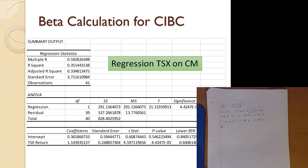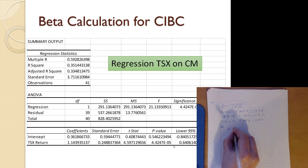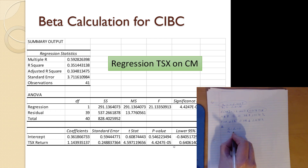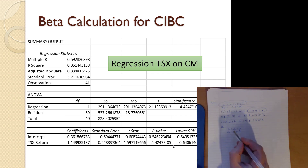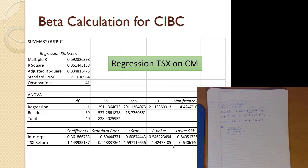Is the CIBC coefficient significantly different than zero? We see a very tiny p-value. H₀ is that beta one is not significant; Hₐ is that beta one is significant or different than zero. That very small p-value suggests we reject H₀ — the overall market return for the TSX is related to the rate of return we would get on CIBC stock.